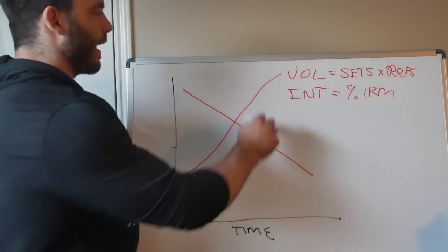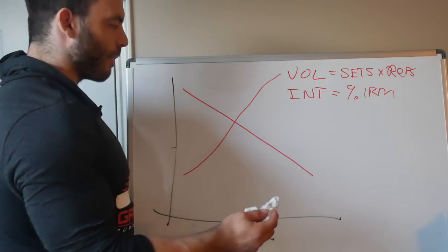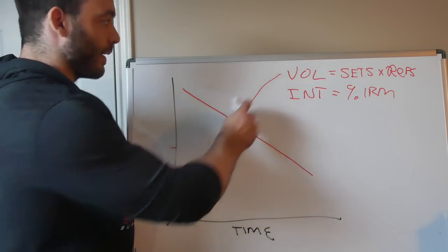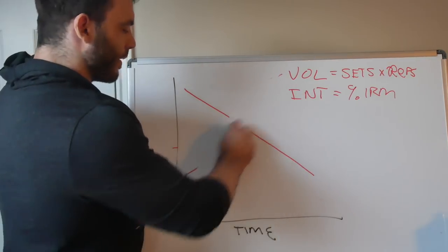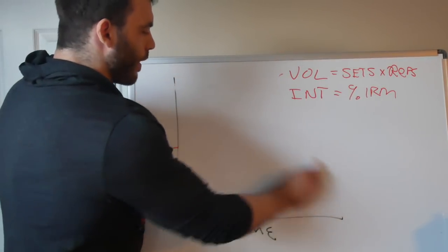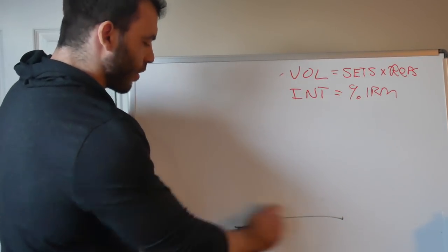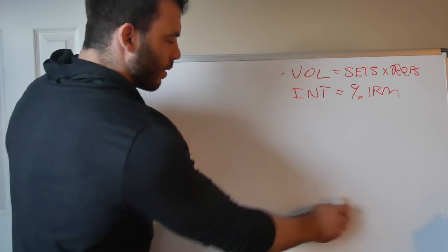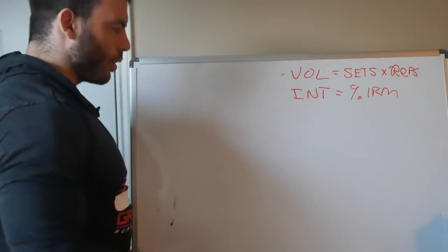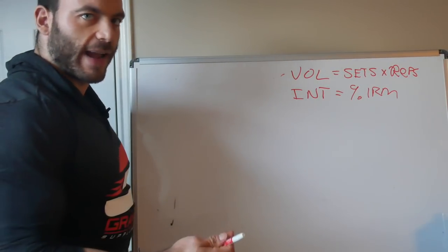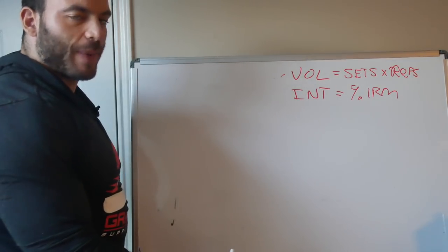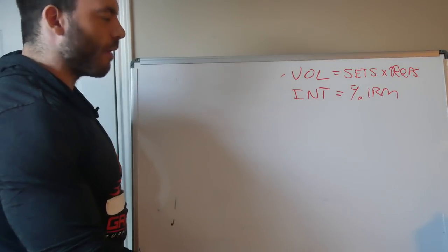So how do you actually do that? How do you go from your 5x5 program to something that looks like this? It's actually pretty simple. All you have to do is start with high reps and then over time go to low reps.